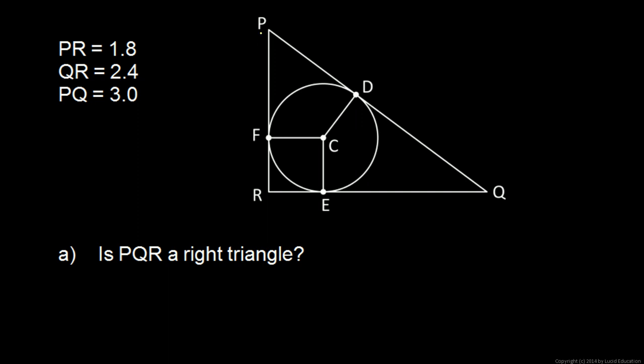Okay, we know it will be a right triangle if the lengths of the sides conform to the Pythagorean theorem. So let's see, PR, that's 1.8, we can write 1.8 squared, plus QR, QR is 2.4, 2.4 squared, that has to equal PQ, which is 3 squared. Okay, if that statement turns out to be true, then it is a right triangle.